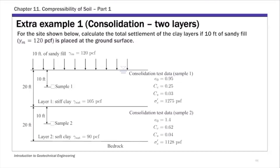This is extra example number one in Chapter 11 consolidation. For this example, we are going to calculate the primary consolidation settlement of two clay layers. Layer 1 is a stiff clay layer and layer 2 is a softer clay layer. We have two sets of consolidation test data — one for the sample taken at the middle of the first layer, and one for the sample taken at the middle of the second layer. We will calculate the settlement for each layer separately and then add them up to get the total settlement.